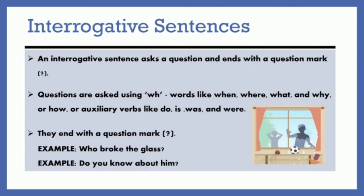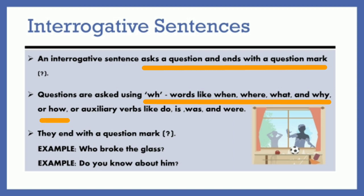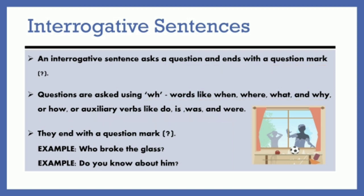Then we have interrogative sentences. An interrogative sentence asks a question and ends with a question mark. Questions are asked using wh-words like when, where, what, why, or how. They may also use auxiliary verbs like do, is, was, were, have, has, and so on. Examples of interrogative sentences are: 'Who broke the glass?' or 'Do you know about him?' These are interrogative sentences that ask a question.